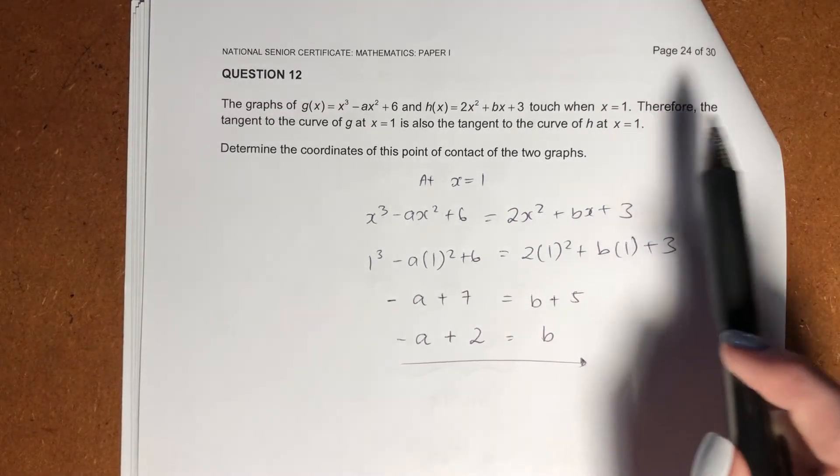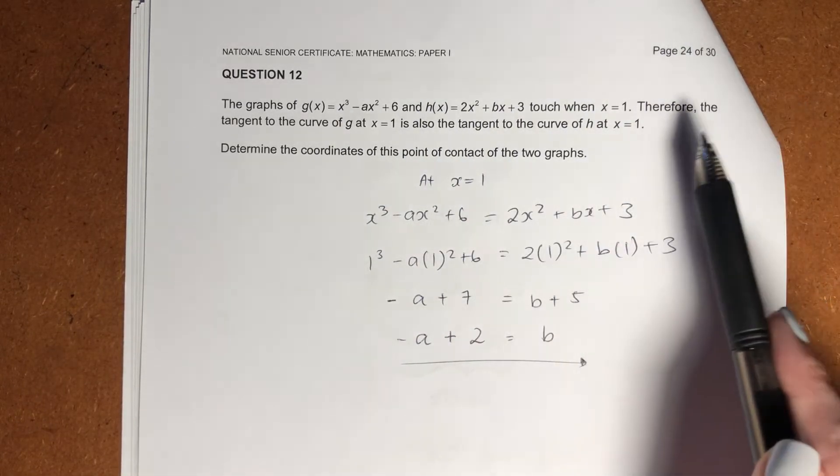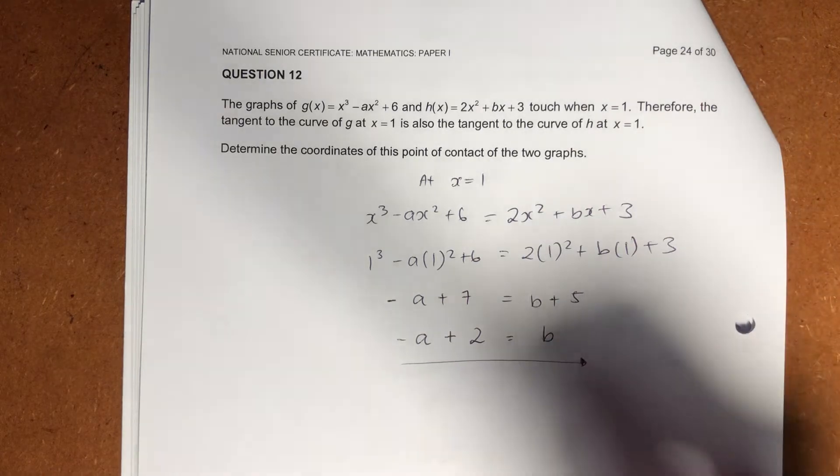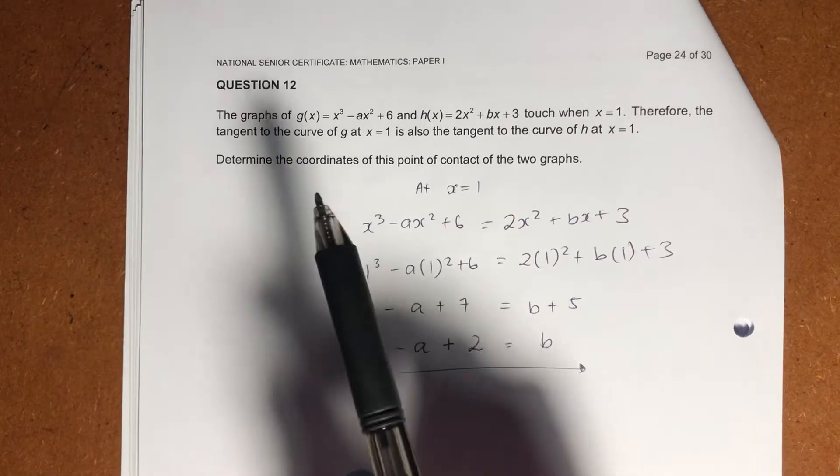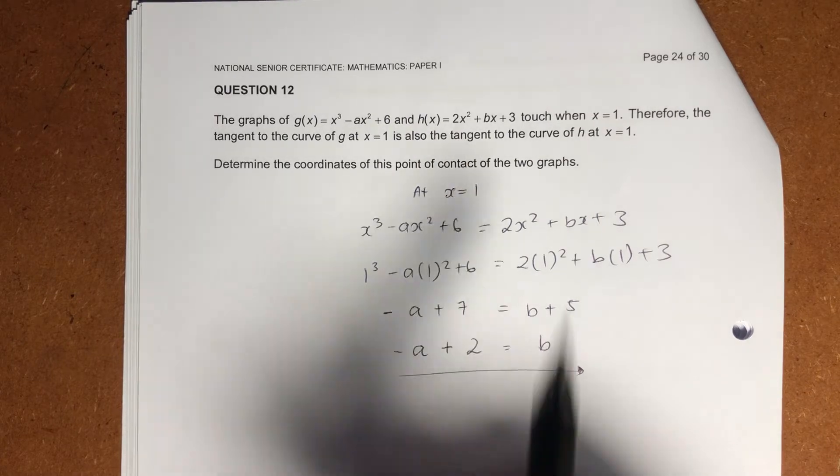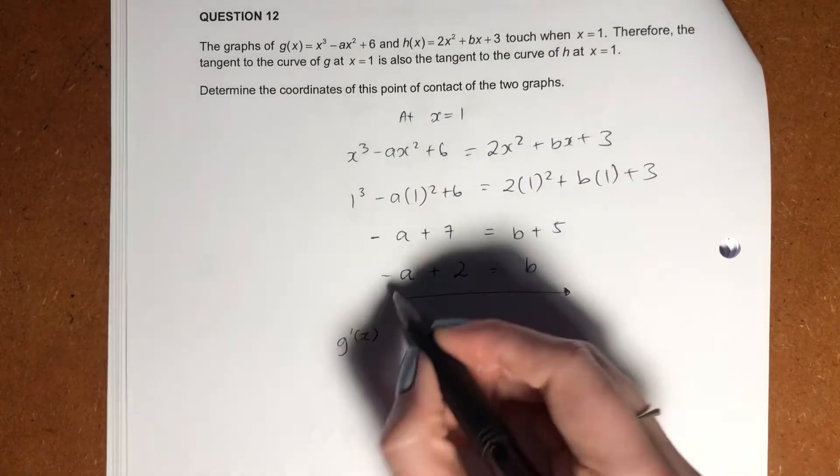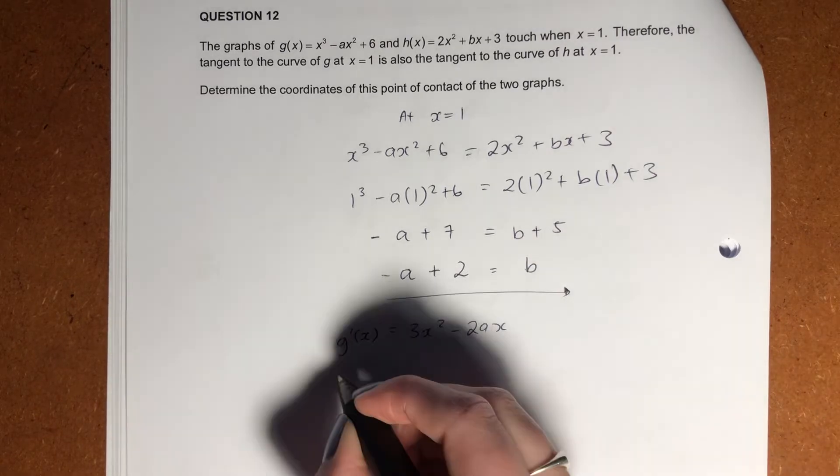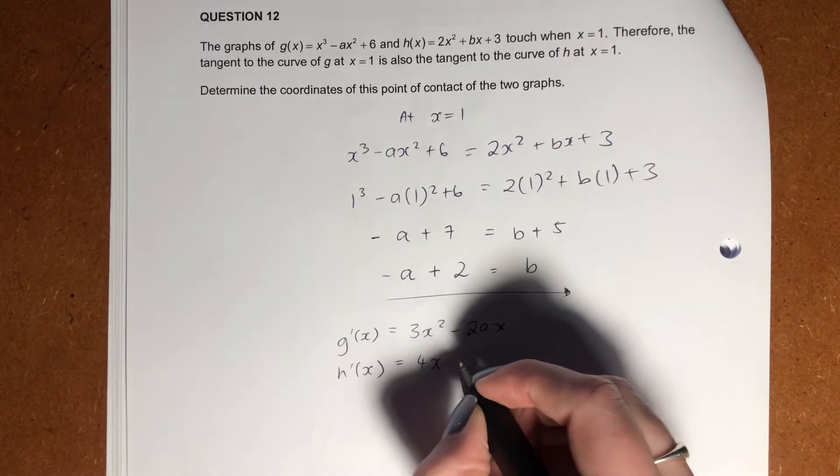What other information do we have? It says the tangent to the curve at g at x equals 1 is also the tangent to the curve at h at x equals 1. Now, when you hear the word tangent, you should be thinking straight line. You should be thinking gradient. When you think the word gradient, you should be thinking the first derivative. So we know that the gradient at the point x equals 1 of this graph equals the gradient of that graph. So firstly, let's go get the gradient. What is the gradient? My first derivative. So let's get that first. Okay. There's that. Let's get the derivative or the gradient of the second graph.